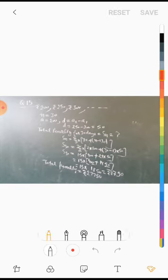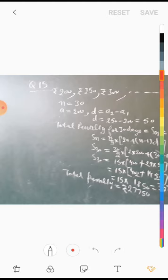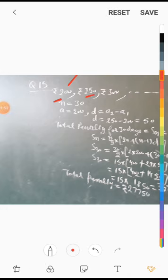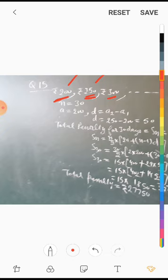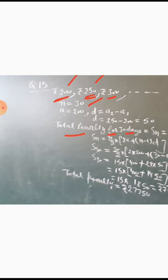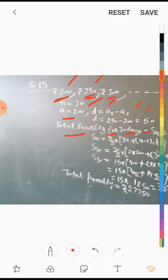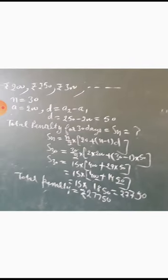Question number 15: A contractor has to pay a penalty. For the first day the penalty is Rs. 200. The contractor delayed by 30 days, so number of days = 30. We need to find the total penalty for 30 days, i.e., S_n. The first term a = 200, a2 = 250, so d = 250 - 200 = 50.